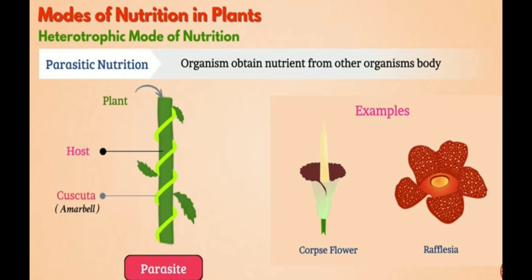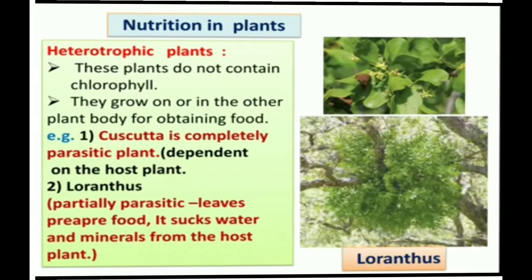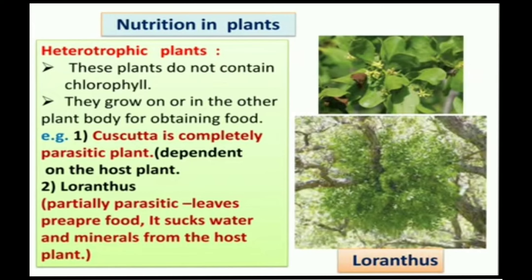Such mode of nutrition in which organisms obtain nutrients from another organism's body is called parasitic mode of nutrition. Other examples are corpse flower and rafflesia. These plants do not contain chlorophyll, so they cannot do photosynthesis and grow on or in other plant bodies to obtain food. Cascota is a completely parasitic plant — it is a yellow, wire-like, leafless plant growing on a host tree, completely dependent on it for nutrients and food.